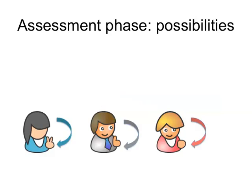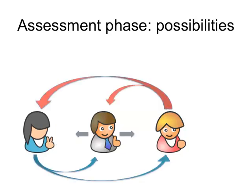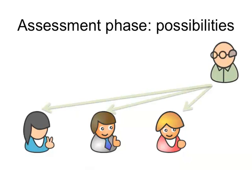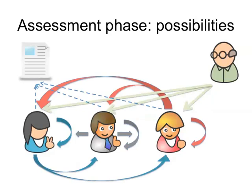The second option is self-assessment: Carla marks her own work, David marks his own work, and Lisa marks her own work — that's an option depending on how you set it up. The third option is peer assessment: Carla marks David and Lisa's work, David marks Carla and Lisa's work, and Lisa marks Carla and David's work. The next option is for you as a teacher to mark the student's work — you don't have to, but you can. So in all, these are the different assessment options using the workshop module: self-assessment, peer assessment, teacher assessment, and example assessment.